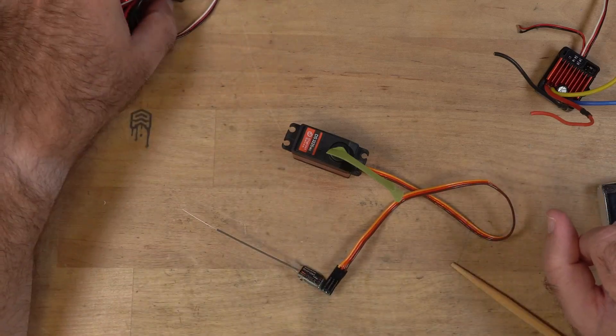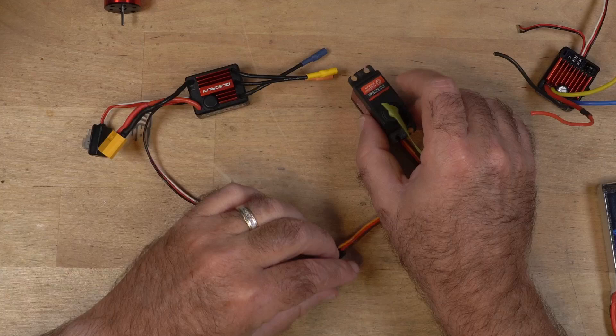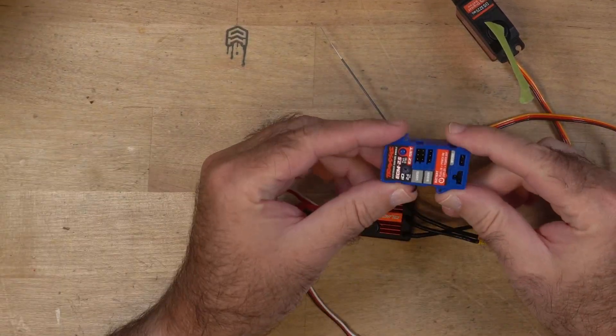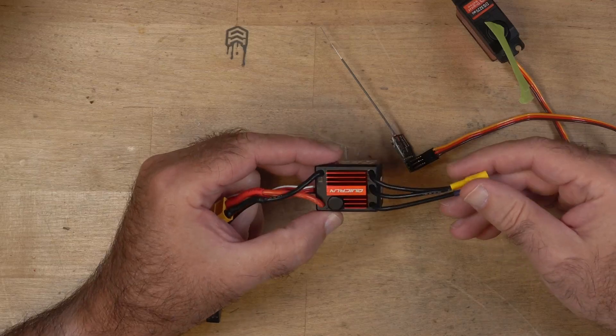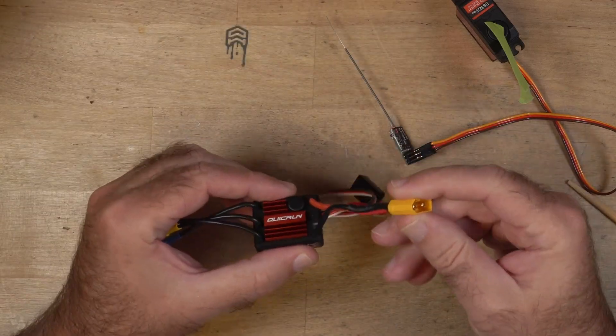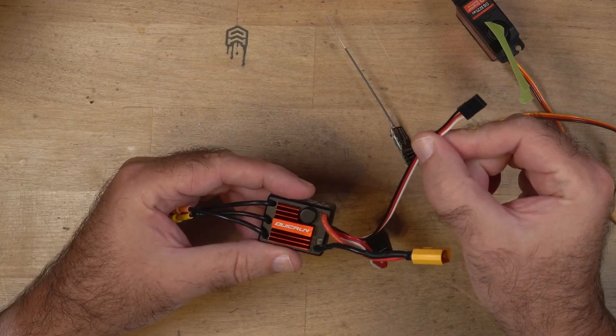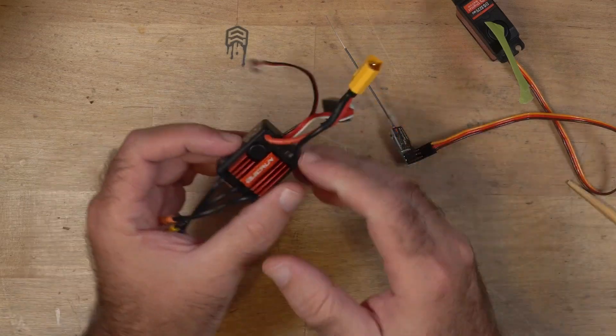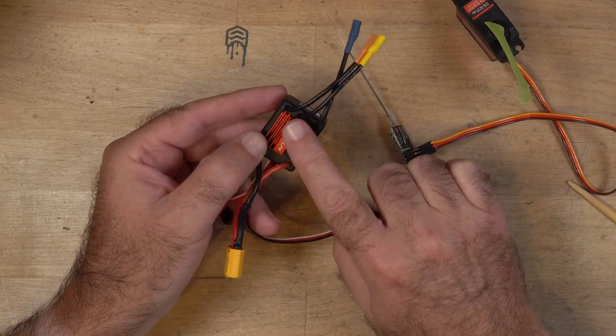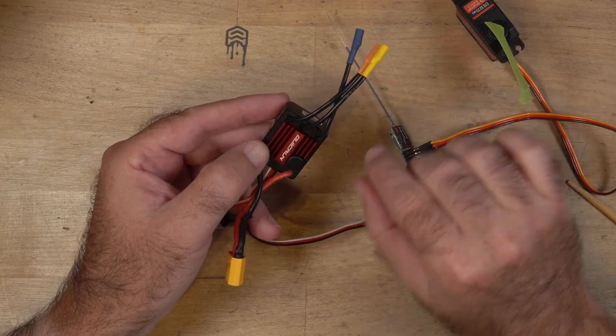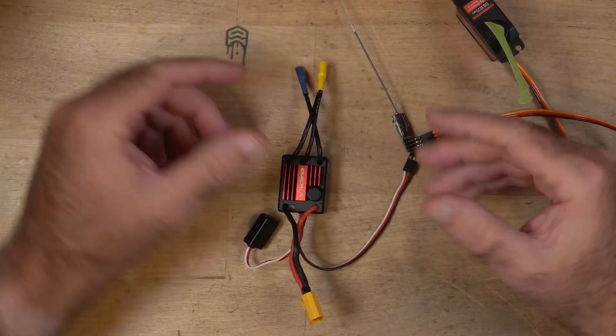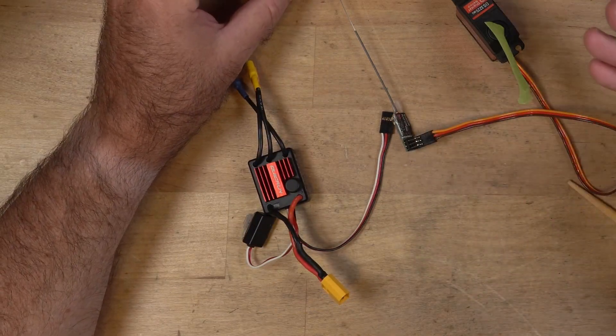So the electronic speed control is the next part. The electronic speed control controls your motor, and there are two kinds of electronic speed controls or three. There's the one that comes built in. There's a brushless one that has three connections that connect to your motor. It will also have a connection that connects to your battery. It will have a connection that connects to your receiver, and it will have an on and off switch. This is where the power comes from. The power comes from the battery. It goes into the electronic speed control. There are MOSFETs inside, there are switches. It turns the power on and off very quickly and that controls the power to your motor. The more it stays on, the faster it will be.